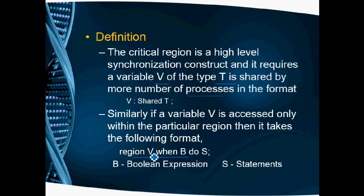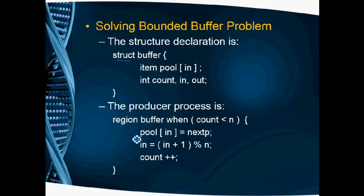For the producer process, we use the format: region V when B do S. Region buffer when count less than N - if count value is less than N, there is space in the buffer, so producer can produce the item. Pool[in] equals next_p stores the value into the buffer. Then in equals in plus 1 mod N increments the location. We store in the first position, then second position, incrementing in. Finally, we increment count. This is how we implement the producer process using critical region.